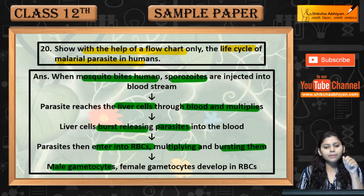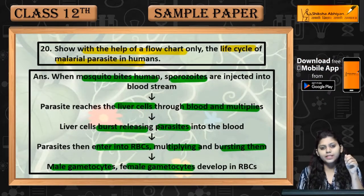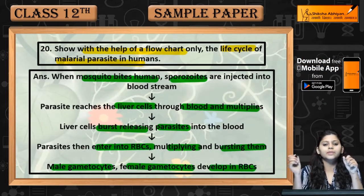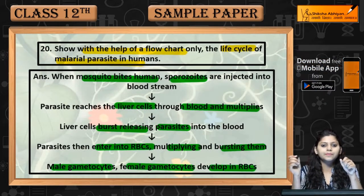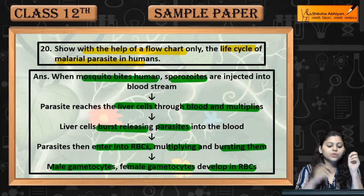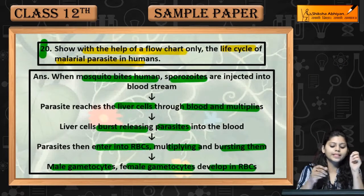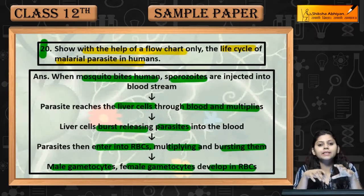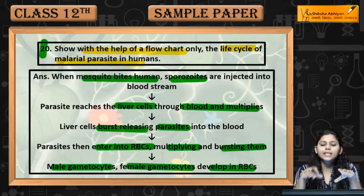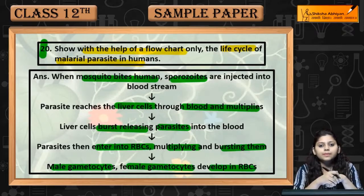Male and female gametocytes develop hote hain RBCs mein. This was question number 20 — the life cycle of malarial parasite in human beings.